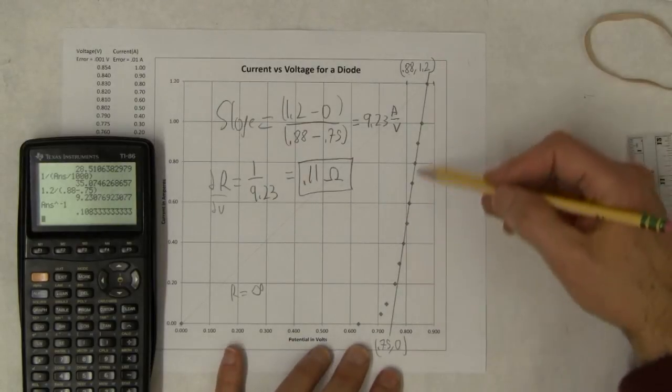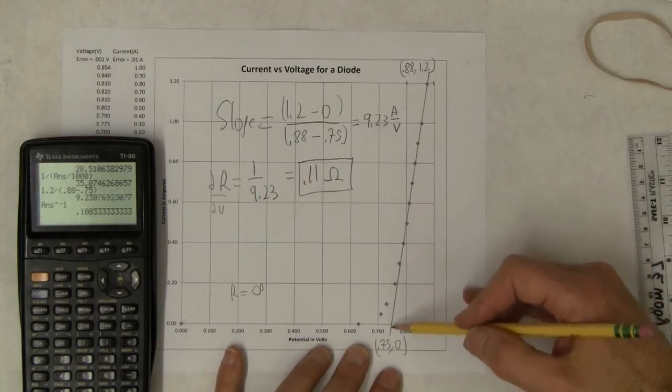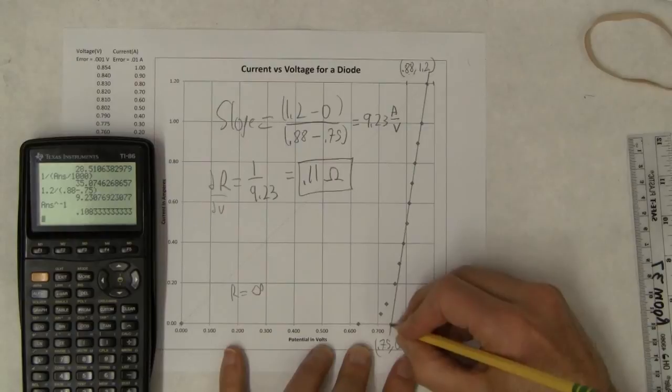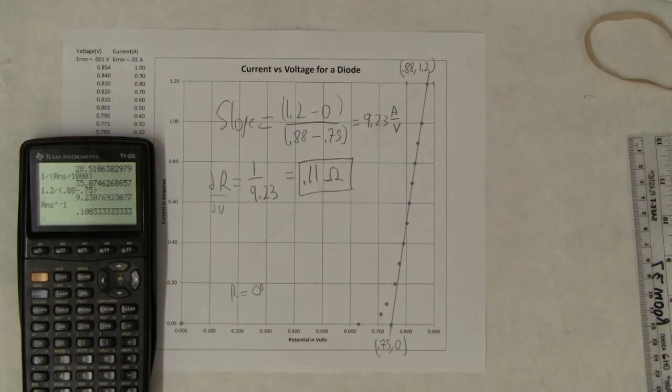So this is a concept called differential resistance, and the concept is just basically if this were zero, zero, what would be the resistance of it is sort of the idea. Okay, I hope that helps.